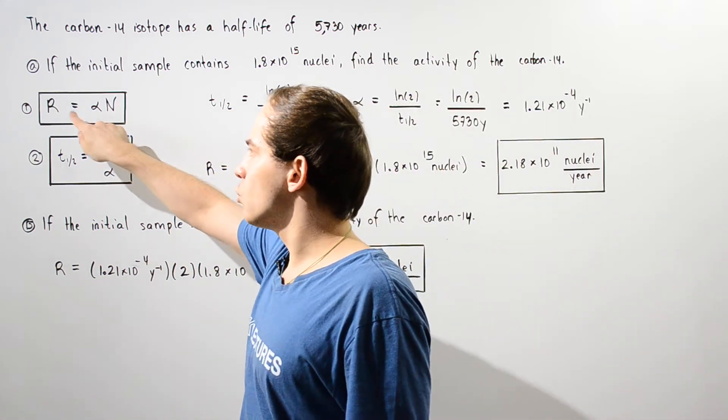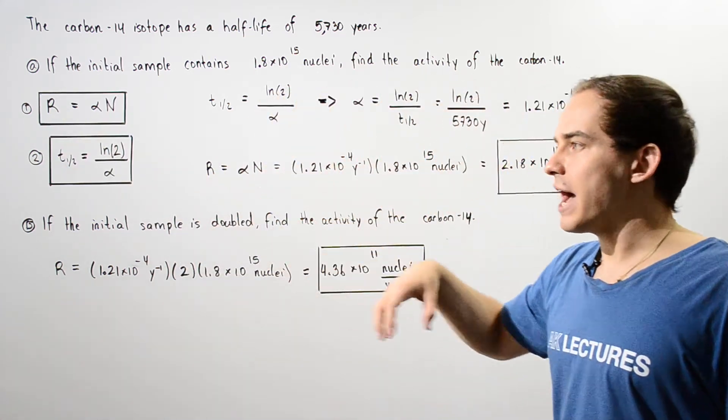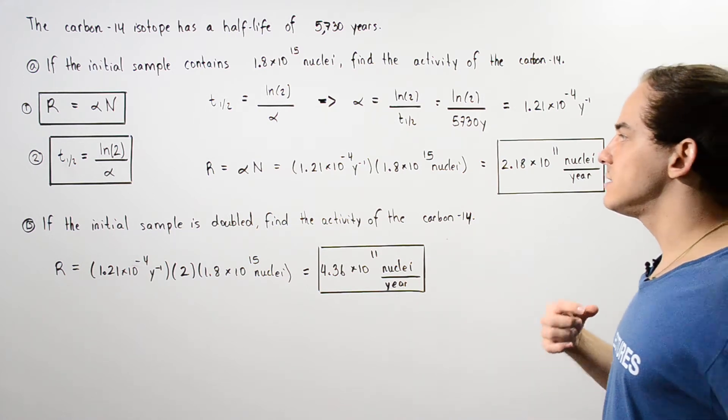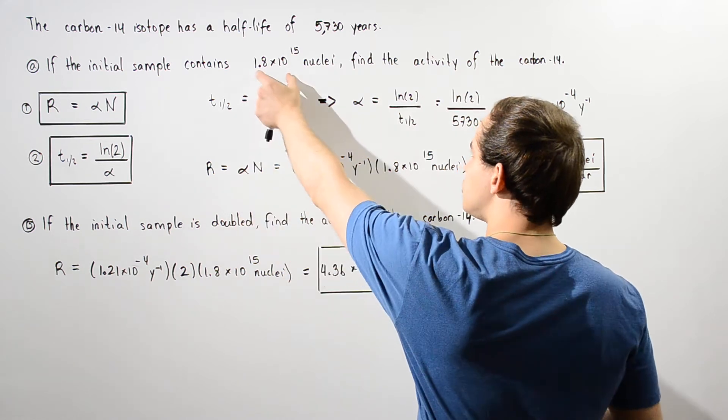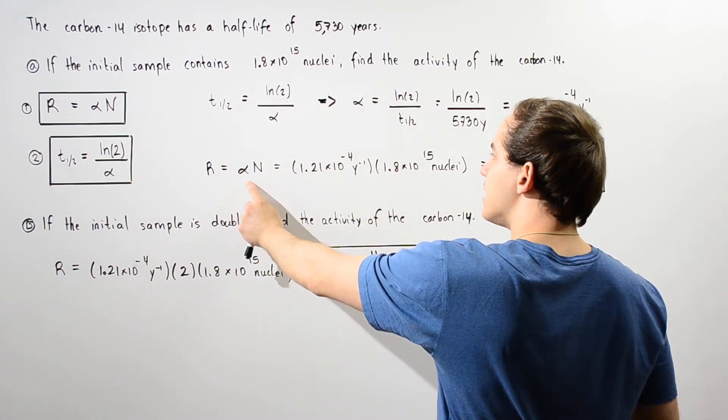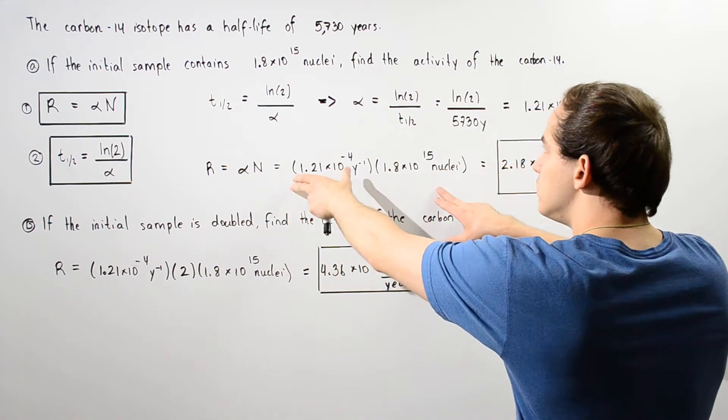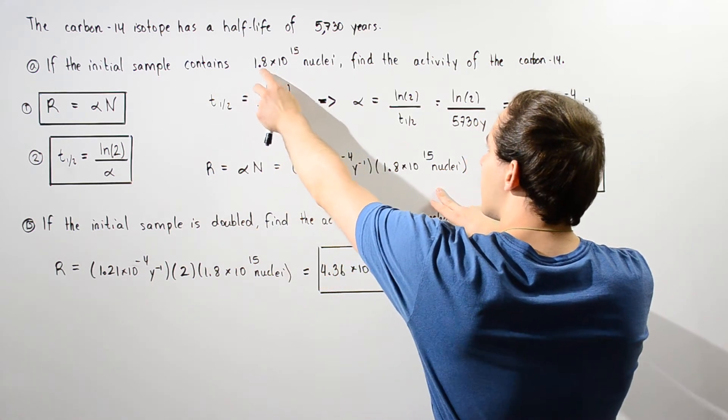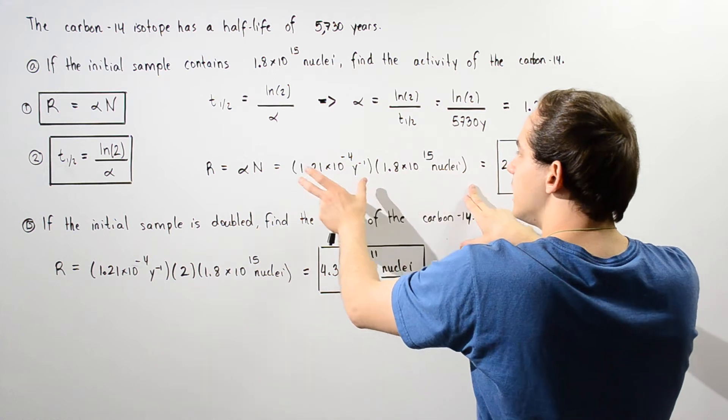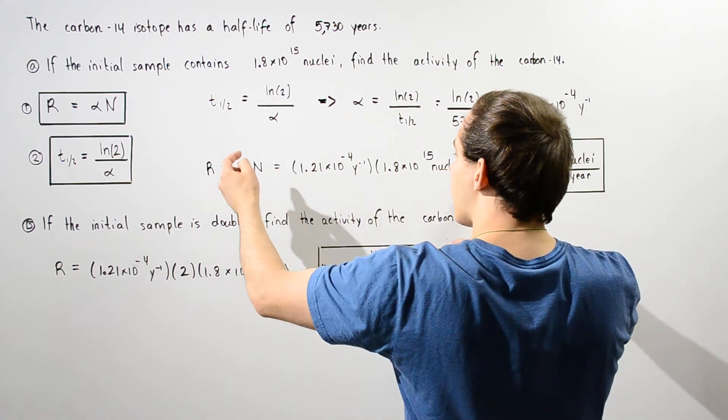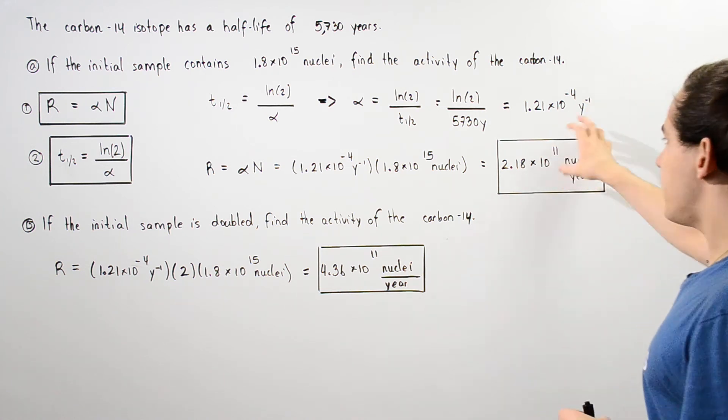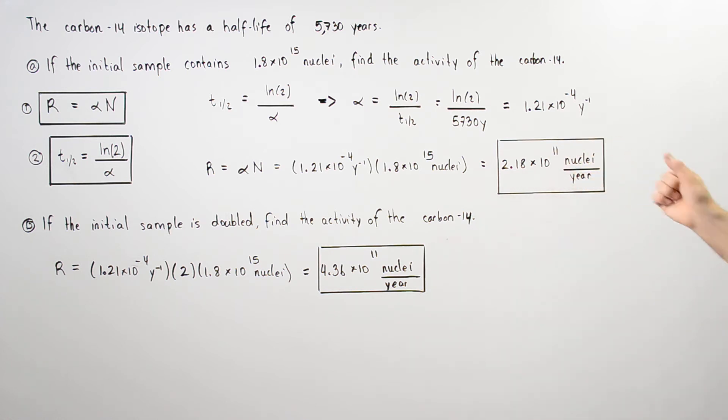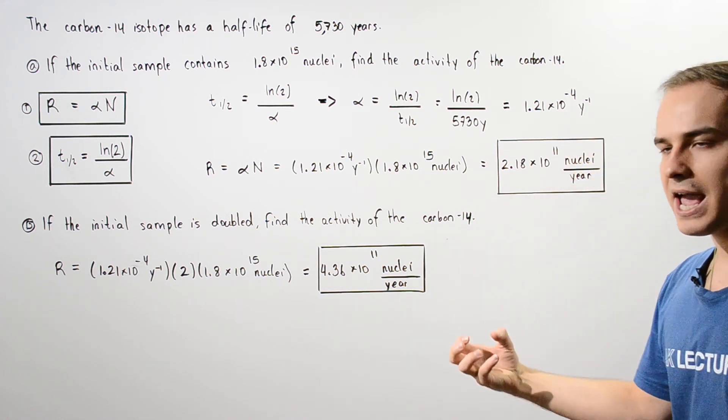Now that we know alpha, we can use equation one to calculate the activity. The activity is given by taking the product of our initial number of nuclei and the decay constant. We multiply 1.8 times 10 to the 15 nuclei by alpha and get about 2.18 times 10 to the 11 nuclei per year. This is the number of nuclei that decay per year.